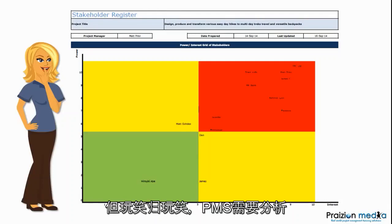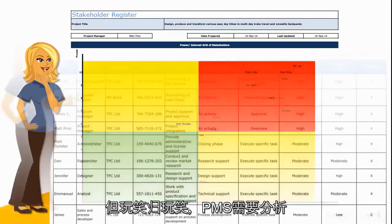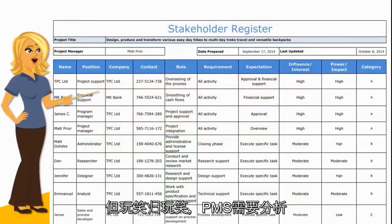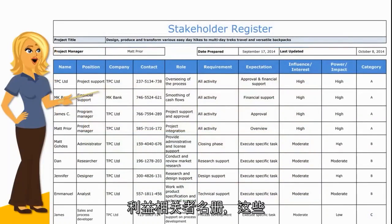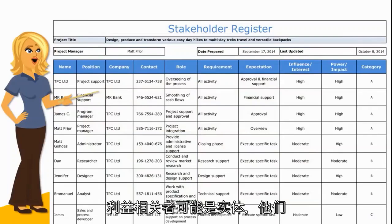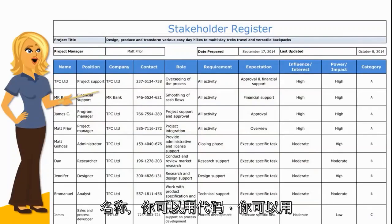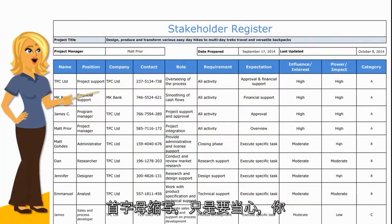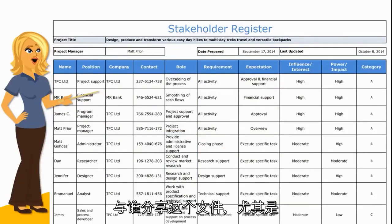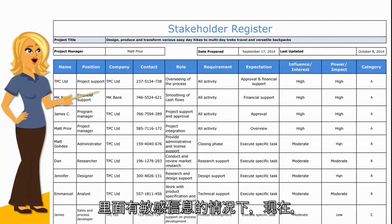Don't show Matt that you're putting him on a high level of power because he could use that against you. But jokes aside, PMs need to analyze stakeholders and then put them into a stakeholder register. These stakeholders could be entities, they could be people — you could use actual names, you could use code, you could use initials. Just be careful who you share this documentation with, especially if there is sensitive information in it.